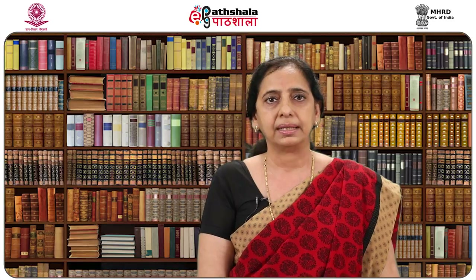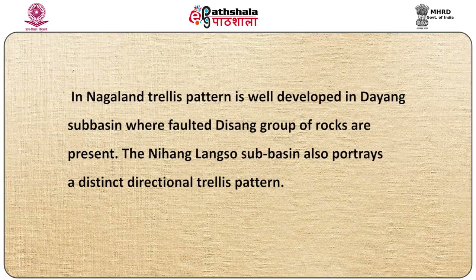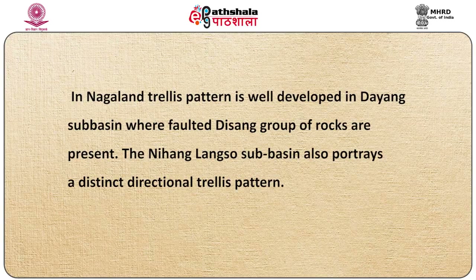In the Appalachian Mountains, alternating weak and strong strata truncated by stream erosion displays a trellis pattern. Around the Colorado Front Range, strong and weak rocks resting against a core of crystalline rocks also portray a trellis pattern. In Nagaland, trellis pattern is well developed in the Dayang sub-basin where faulted Dishang group of rocks are present. The Nihang Langso sub-basin portrays a distinct directional trellis pattern.